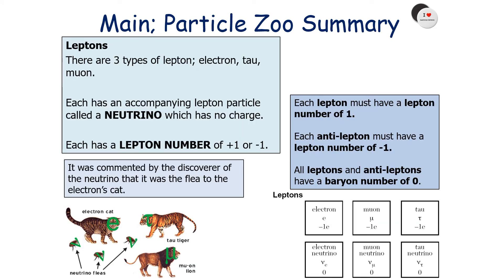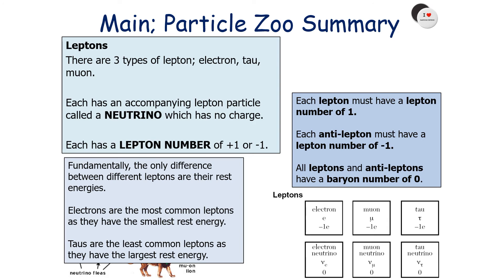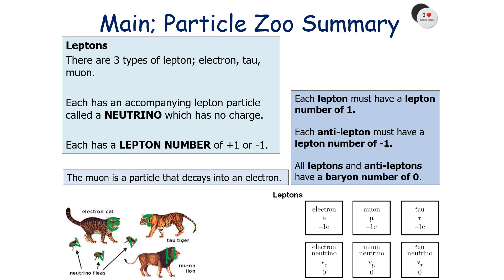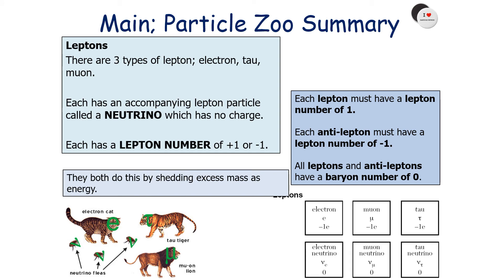The first particle family is the lepton. There are three types of lepton: electrons, tau, and muons. Each lepton has an accompanying neutrino particle which has no charge. Leptons have a lepton number of either plus one or minus one — each lepton has a lepton number of plus one, and each anti-lepton has a lepton number of minus one. All leptons and anti-leptons have a baryon number of zero. The only difference between different leptons is their rest energies: electrons are the most common as they have the smallest rest energy, while tau is the least common with the largest rest energy. The muon decays into an electron, as does the tau, by shedding excess mass as energy.